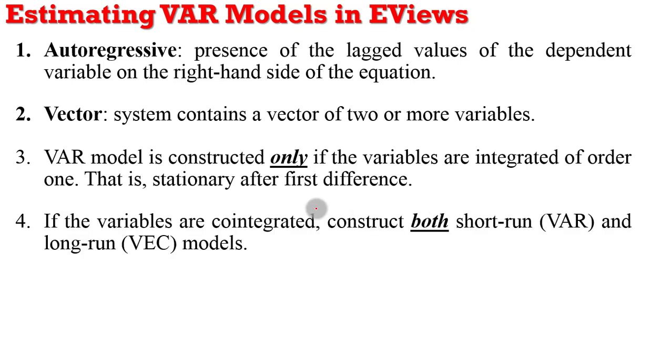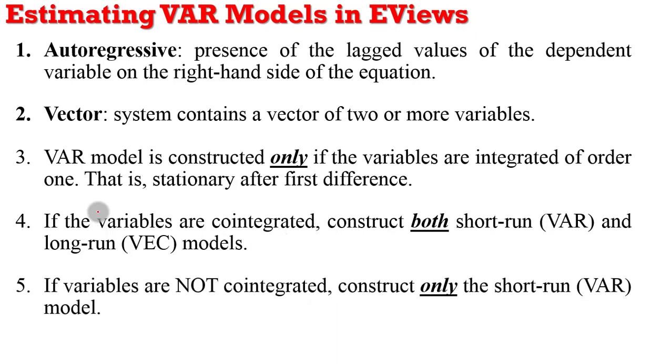Likewise, if the variables are cointegrated, you construct both short run, which is the VAR model, and the long run model, which is the vector error correction. So once cointegration is confirmed, go ahead to run both the VAR and the VECM models. But if there is no cointegration, you can only run the VAR model and not the VECM.